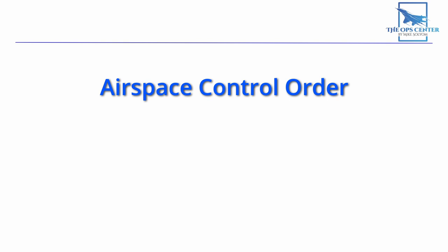An airspace control order is going to contain a plan for de-conflicting airspace in an operational area — in other words, where friendly aircraft should and should not go to avoid fratricide.